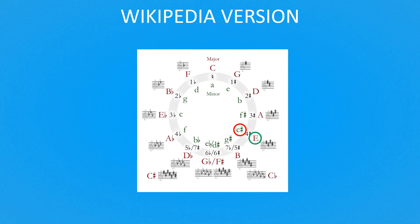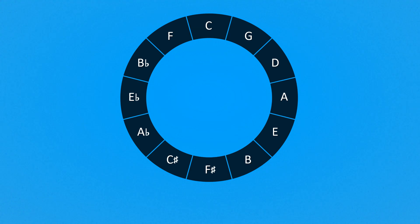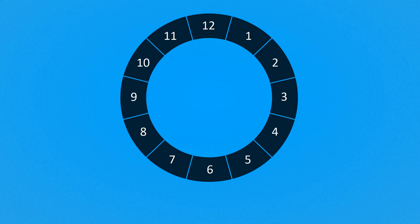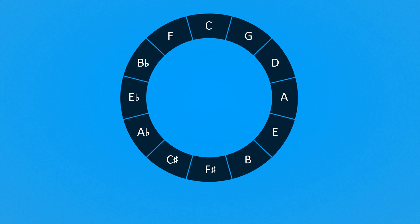C sharp minor scale is relative to E major scale. Now the question is how can we get this information looking at our simple circle? Before answering, we must note that we are very lucky, because the circle of fifths is made up of twelve notes, just like a clock is made up of twelve hours. So it's quite simple and intuitive to consider an interval of notes as an interval of time.